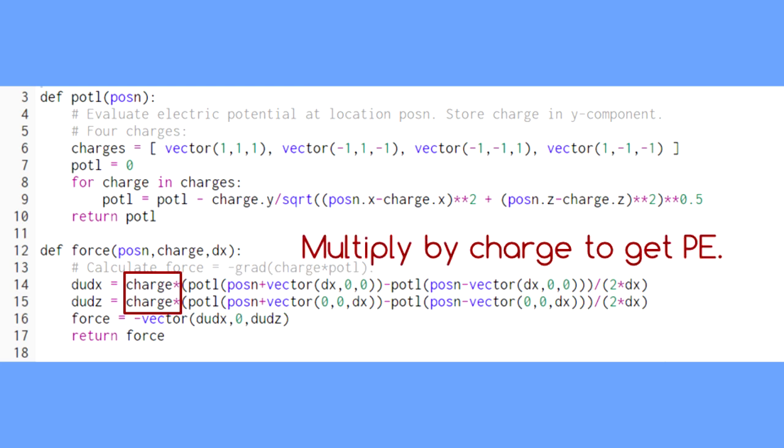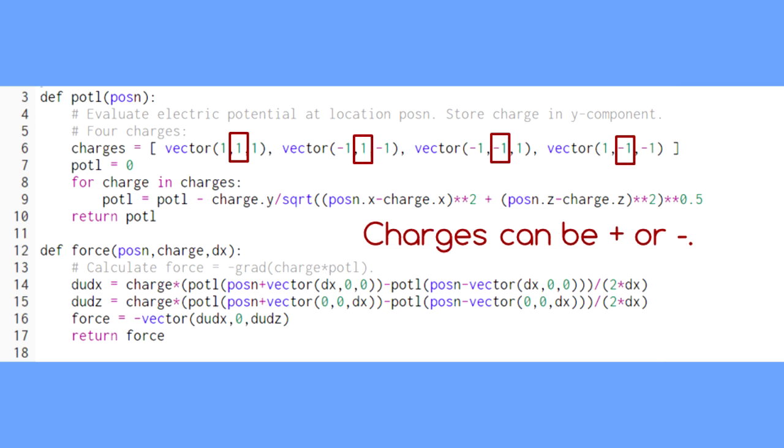One of the most important ways in which the electric force is different from gravity is that the electric force can be repulsive. So, in our list of charges, we're storing the charge, positive or negative, in the y component.